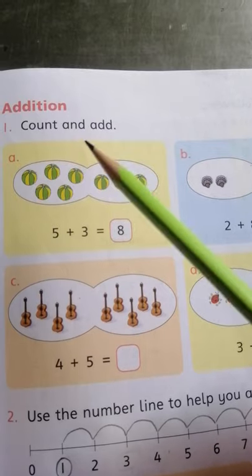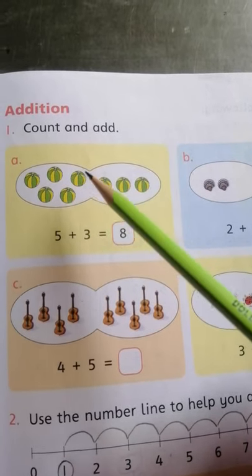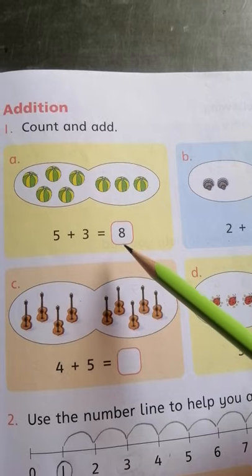Also now count the whole balls. These are 1, 2, 3, 4, 5, 6, 7, 8. So we write here 8.